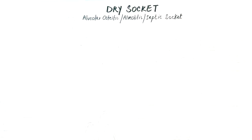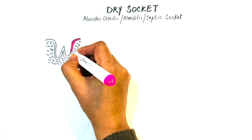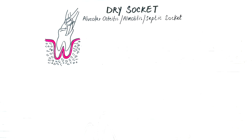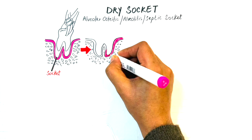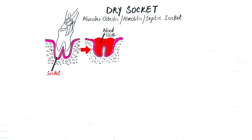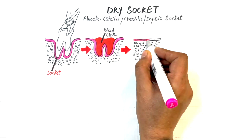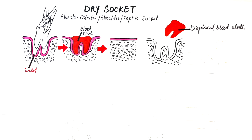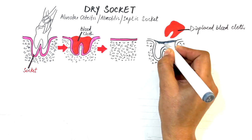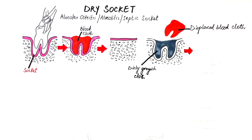Dry socket, also known as alveolar osteitis, alveolitis, or septic socket, is an oral condition that can happen to adults after they have had a tooth extraction. The hole in the bone where the tooth used to be is called a socket, and typically after a tooth is pulled, a blood clot forms in the socket to protect the bone and nerves underneath as it heals. The space occupied by the blood clot is then gradually filled by bone. Sometimes the blood clot either becomes displaced or doesn't fully form at all. The affected socket initially might be filled with a dirty grayish clot, which is lost and leaves an empty bony socket with nerves being exposed — giving it the name dry socket.